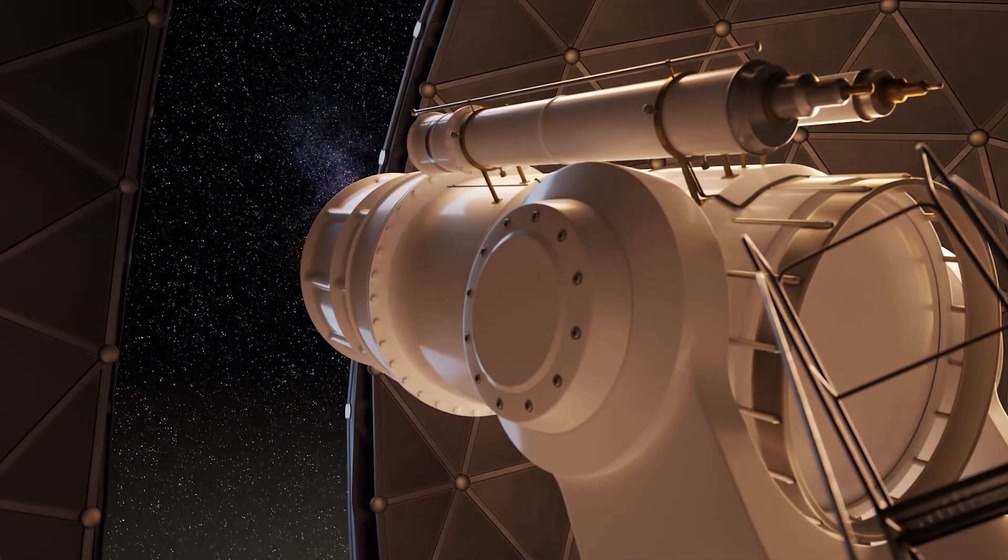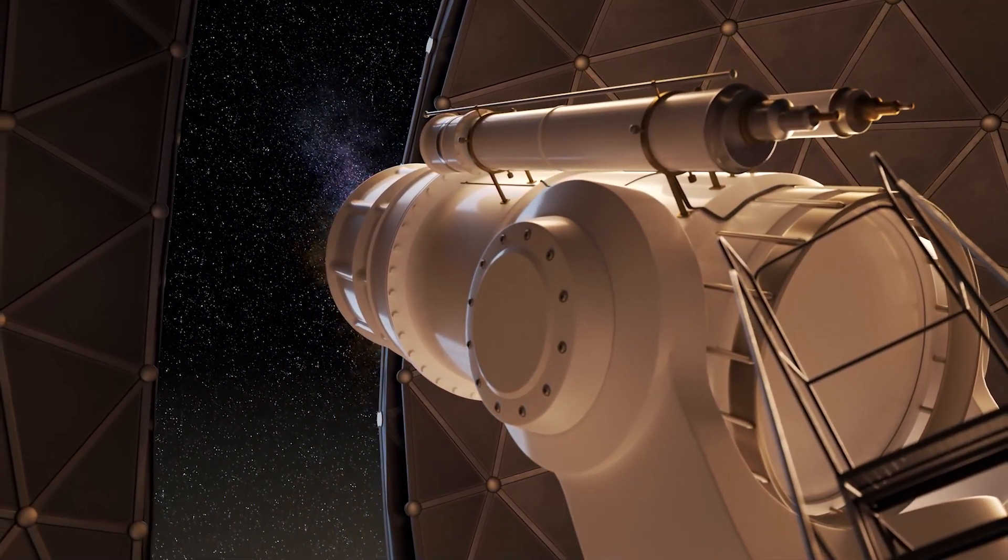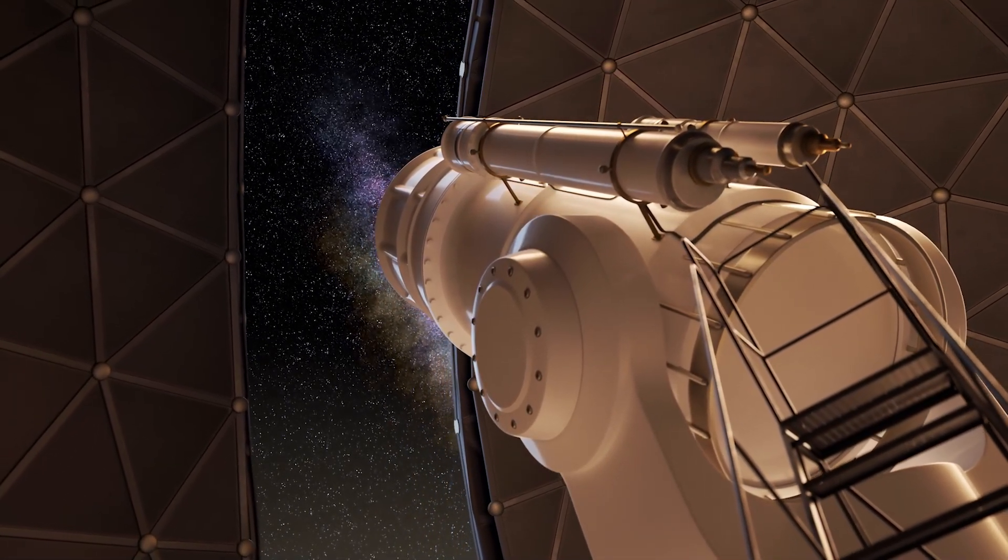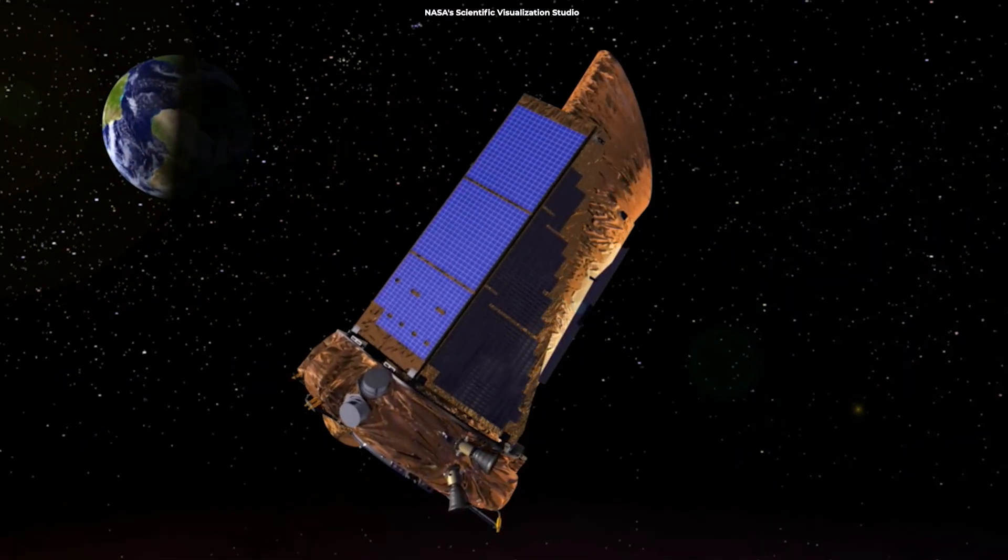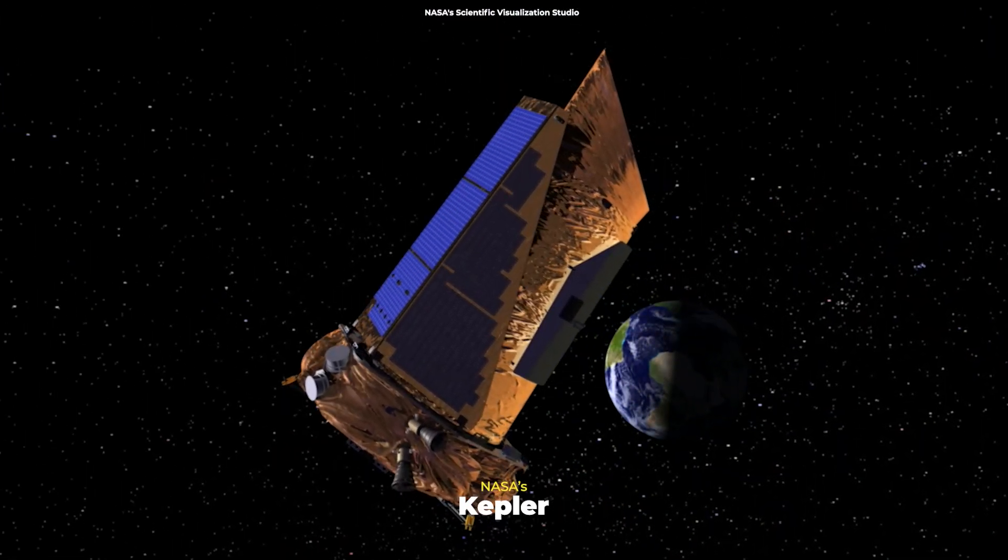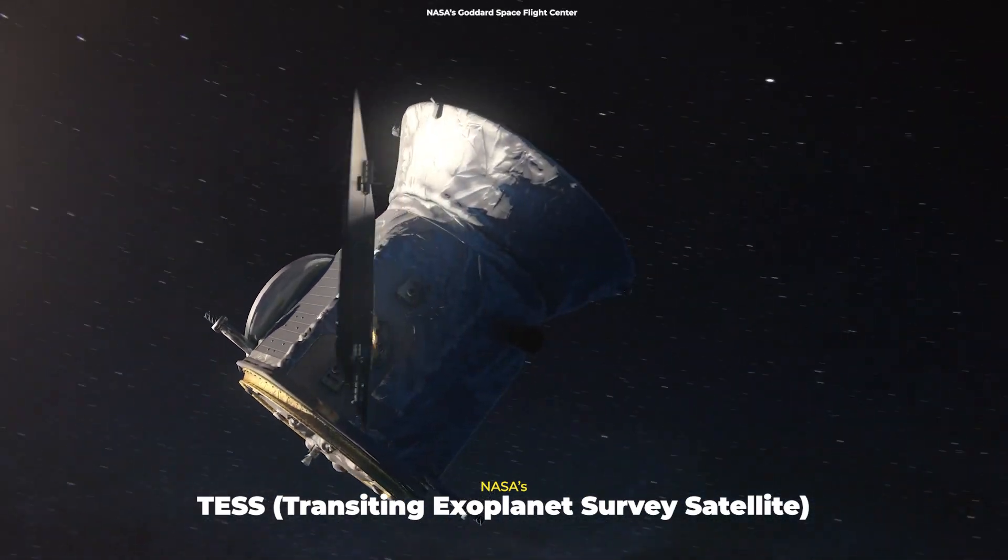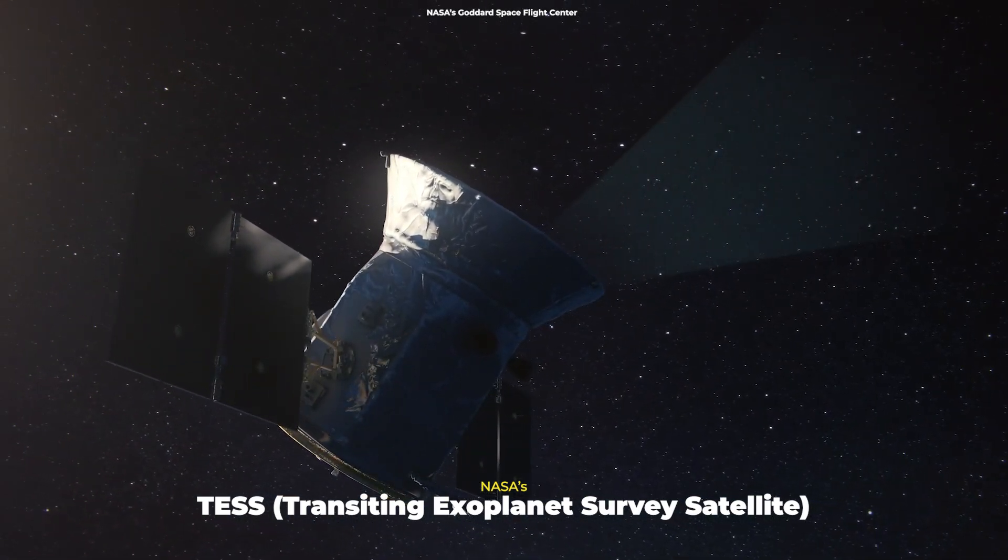Astronomers have searched for dips in optical light, electromagnetic radiation that humans can see, using both ground-based and space-based observatories, such as those on NASA's Kepler and TESS missions. This has led to the discovery of thousands of planets.